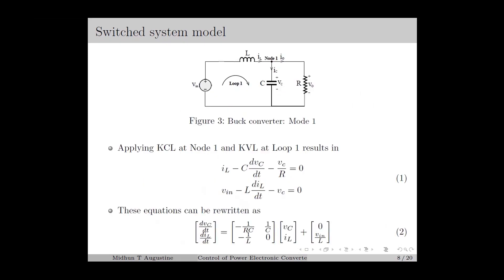Corresponding to mode 1, we have the equivalent circuit as in figure 3, which is basically an RLC circuit with a DC source. The differential equations describing the circuit dynamics are obtained using basic circuit theory laws. By applying KCL at node 1, we have IL minus IC minus IO equal to 0, which gives IL minus C·dVC/dt minus VC/R equal to 0. By applying KVL at loop 1, we obtain VIN minus VL minus VC equal to 0, which gives VIN minus L·dIL/dt minus VC equal to 0.